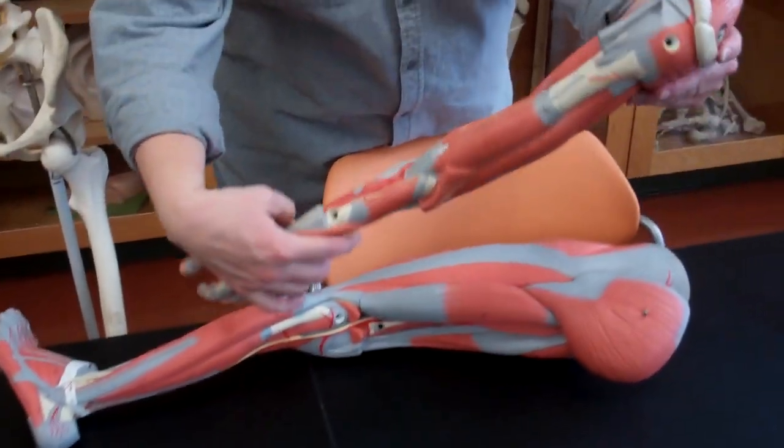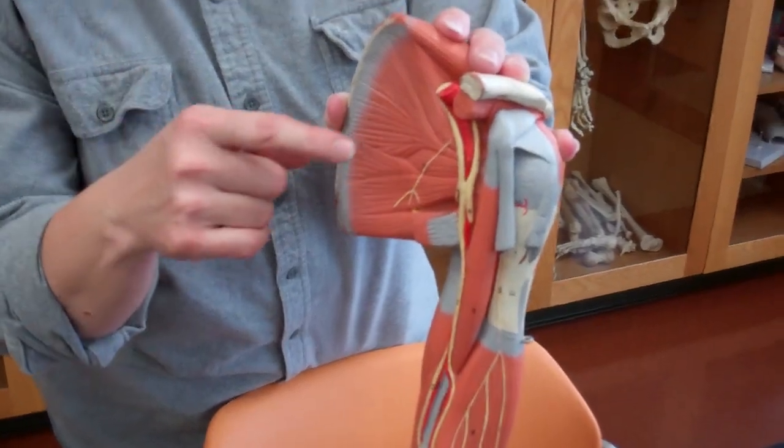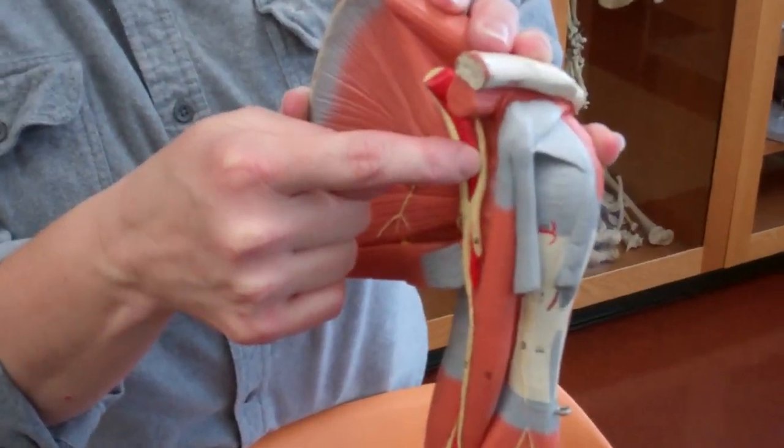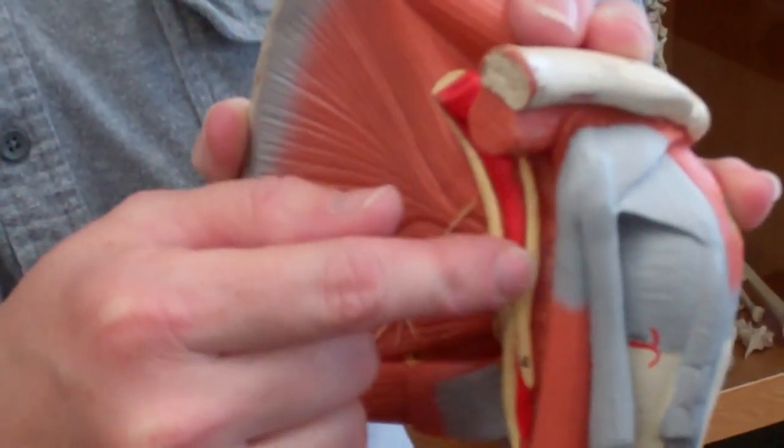Okay, so we'll start with the arm. We have four vessels that you need to know in the arm. The axillary artery, that's going to come from the shoulder and into the upper portion of the arm, near the head of the humerus.